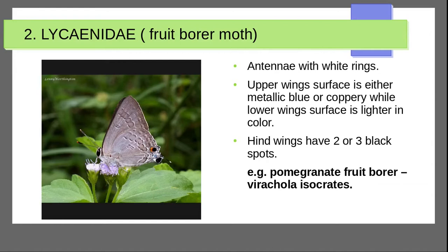Next family is Lycaenidae. Antenna has white rings. The upper surface of wings is either metallic blue or coppery while the lower surface is lighter in color. Hindwings have two or three black spots. Example: pomegranate fruit borer — Deudorix isocrates.